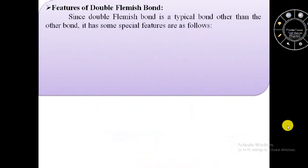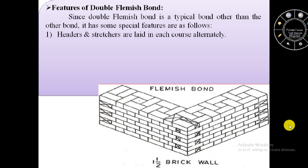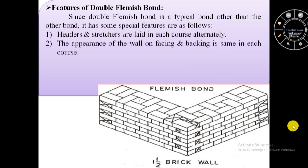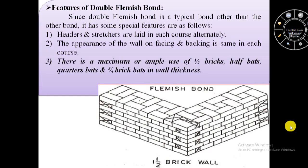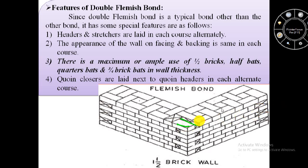Features of double Flemish bond: first, headers and stretchers are laid in each course alternately; second, the appearance of the wall on facing and backing is the same in each course; third, there is maximum use of half bricks, half bats, quarter bats, and three-fourth brick bats in wall thickness. Coin closers are laid next to coin headers in each alternate course.